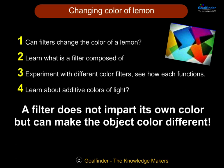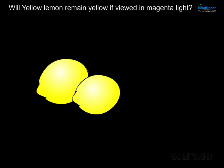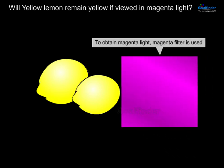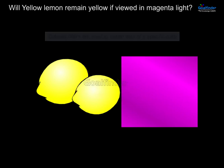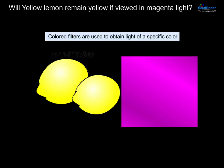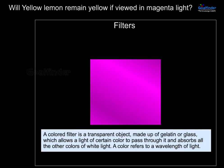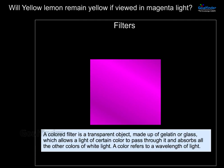A filter does not impart its own color but can make an object's color appear different. Will a yellow lemon remain yellow if viewed in magenta light? To obtain magenta light, a magenta filter is used. Colored filters are used to obtain light of a specific color. A colored filter is a transparent object made up of gelatin or glass which allows light of a certain color to pass through it and absorbs all other colors of white light. A color refers to a wavelength of light.